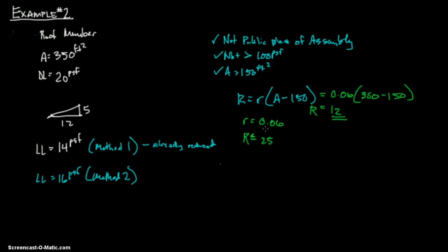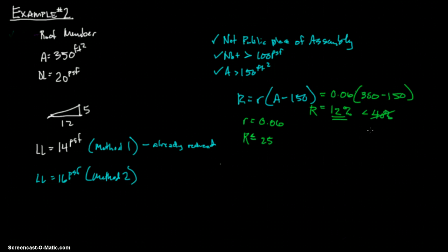So right now, this is controlling, despite that's in the table. That says the live load reduction may not exceed 40%. It's also less than 40%. So this will control. Not 40. 60% for other members. Or R, as determined from the formula. Let's determine that from the formula. R equals 23.1.